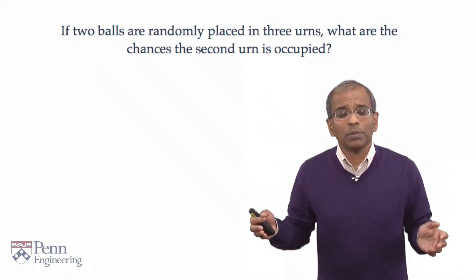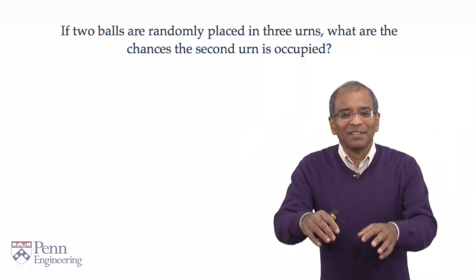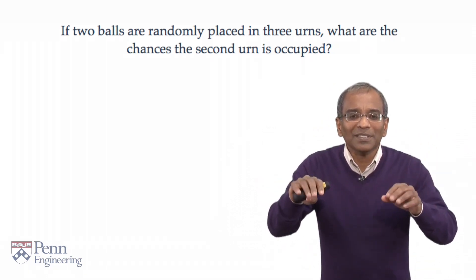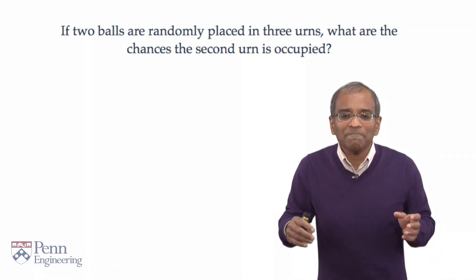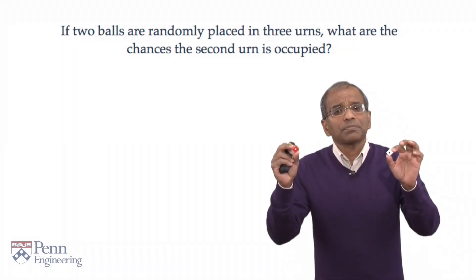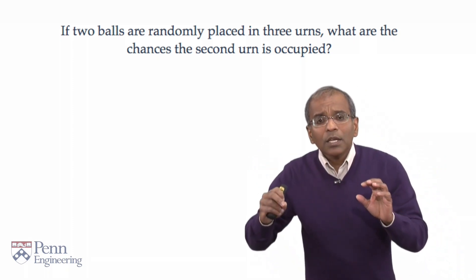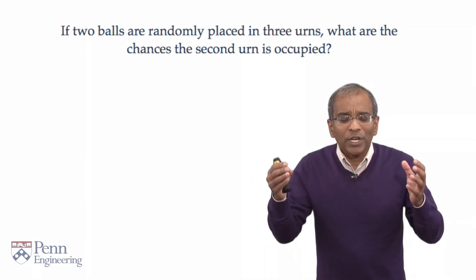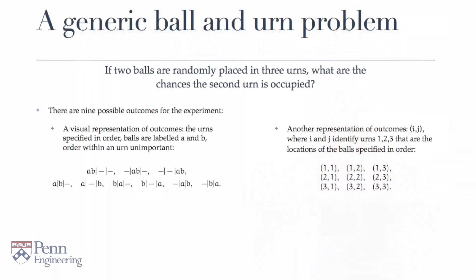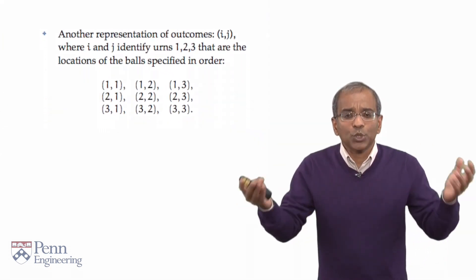This is a generic ball-and-urn problem. In this case, there is no verbal camouflage around the balls and the urns — we're not talking about dice, or people, or birthdays, or the faces of a die. We've already modeled it: we have two balls, which could be two dice or two people. Now you're going to place the balls in three urns, and we need a clean mathematical model for the experiment.